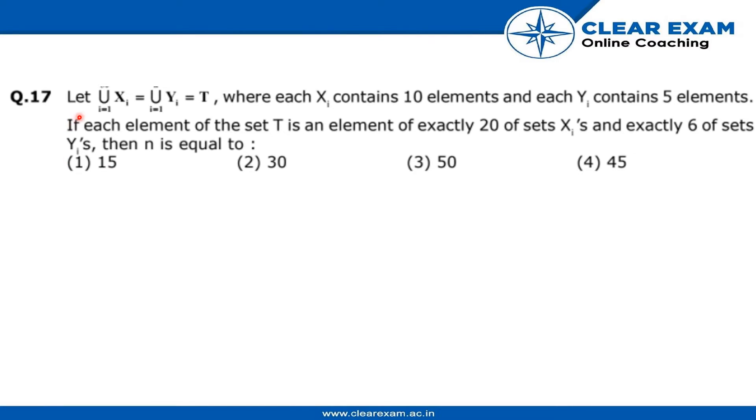The question is: let ∪Xi = ∪Yi = T, where Xi contains 10 elements and each Yi contains 5 elements. If each element of the set T is an element of exactly 20 sets of Xi's and exactly 6 sets of Yi's, then n is equal to.